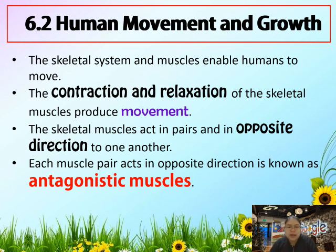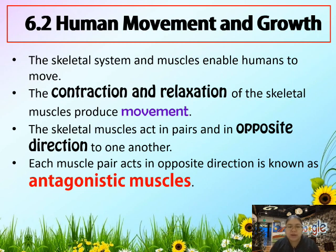The skeleton and the muscle enable the human to move. Next, contraction and relaxation — the movement for the skeleton involves contraction and also relaxation. After they produce a movement, the muscles act in a pair, but both move in opposite directions to each other. Every muscle pair that acts in opposite directions we call an antagonistic muscle.